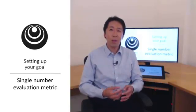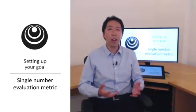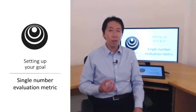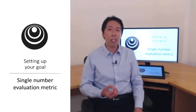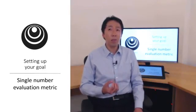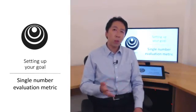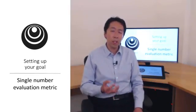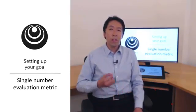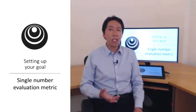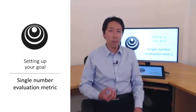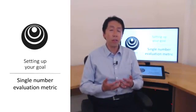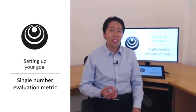Whether you're tuning hyperparameters or trying out different ideas for learning algorithms, or just trying out different options for building your machine learning system, you'll find that your progress will be much faster if you have a single real number evaluation metric that lets you quickly tell if the new thing you just tried is working better or worse than your last idea. When teams are starting on a machine learning project, I often recommend that you set up a single real number evaluation metric for your problem. Let's look at an example.